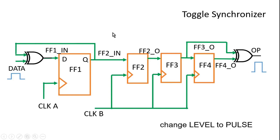In a nutshell, whenever there is a change in the input of the clock domain B circuitry, the XOR gate converts it into a pulse.